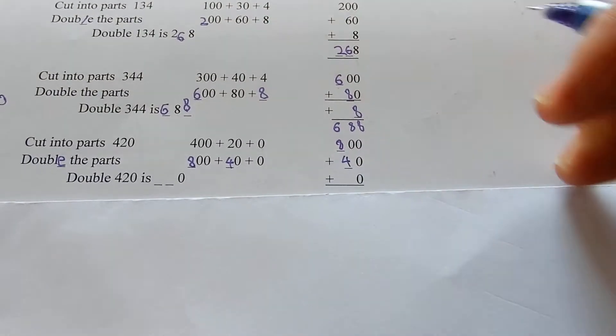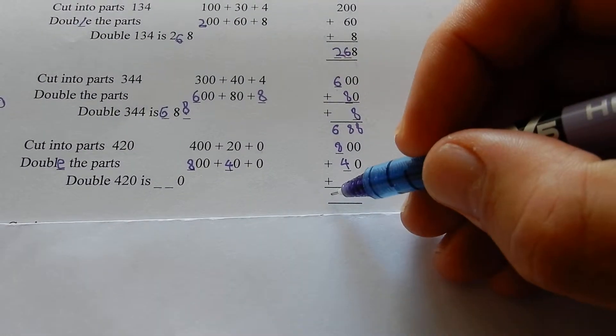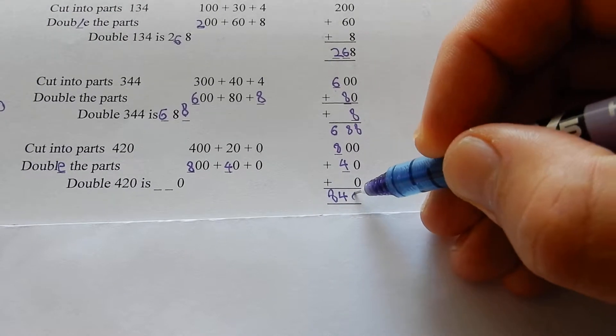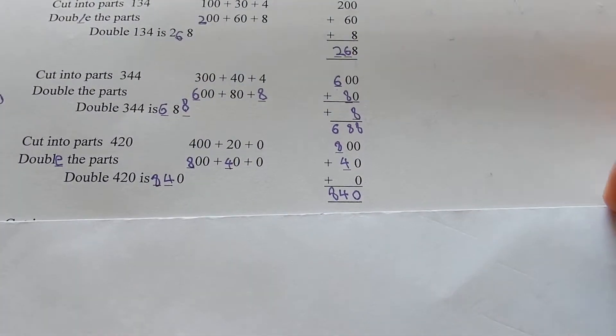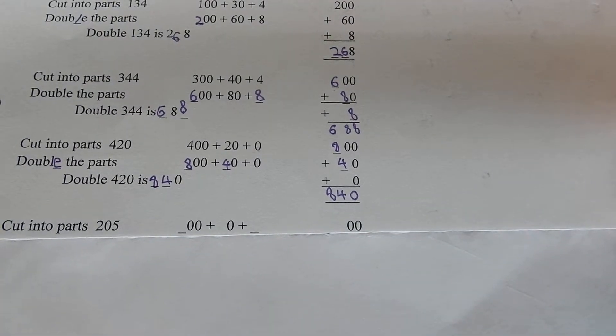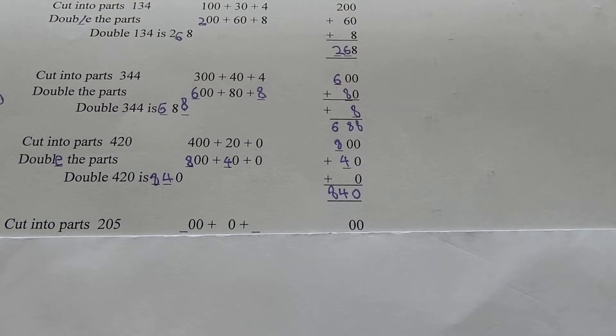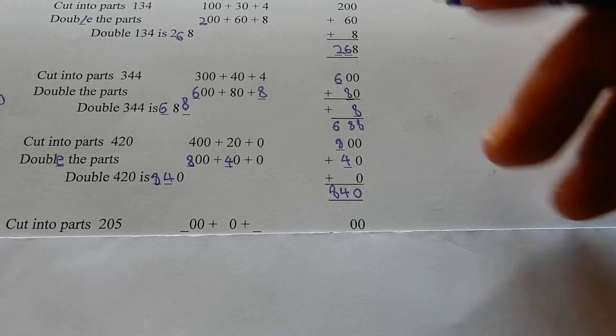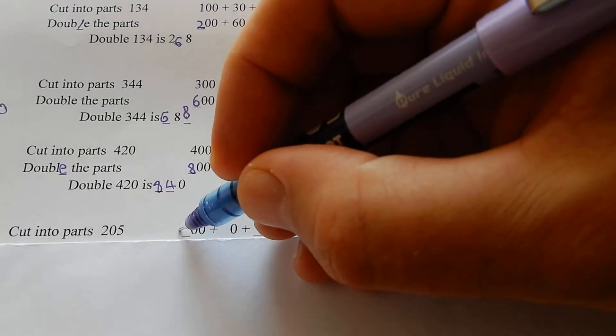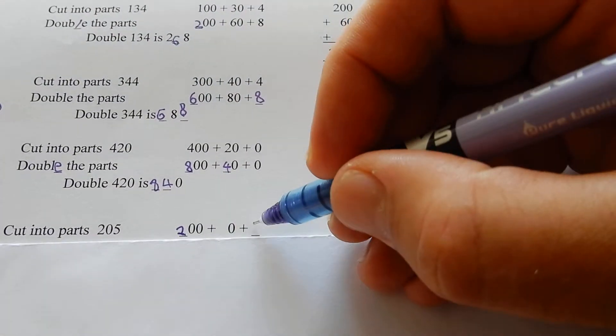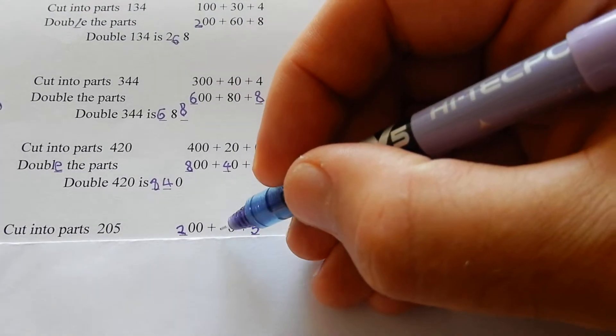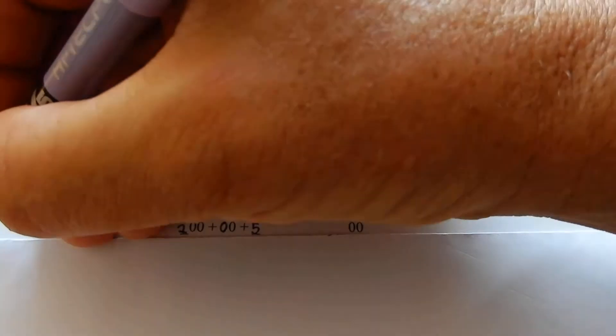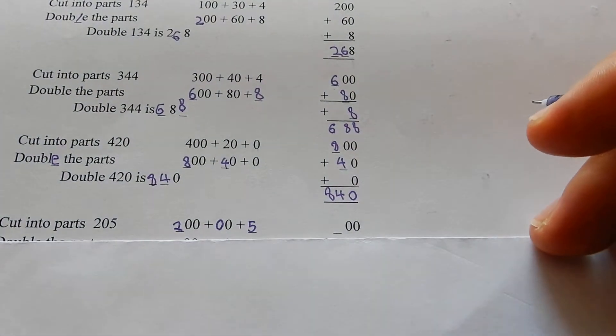Add those together: 800 plus 40 plus 0 is 840. Now ones that are bigger than 5. Double 205. 205 in parts is 200 plus 0 plus 5.